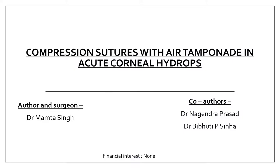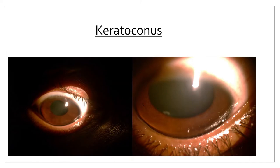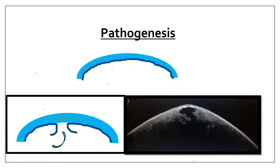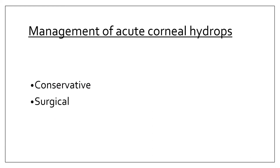This video is based on management of acute corneal hydrops with the help of compression sutures. Keratoconus is an underdiagnosed entity and acute corneal hydrops is one of its known complications. The basic pathogenesis involves corneal thinning and stretching, Descemet membrane tear, surge of aqueous towards the corneal stroma, leading to corneal edema.